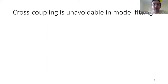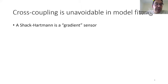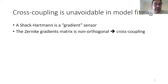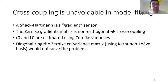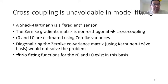So the first message I want you to take from this talk is that if you're going to work on R0 or L0, the estimation cross-coupling is unavoidable. This is because the Shack-Hartmann is a gradient sensor, and the gradient matrix is not orthogonal, although the polynomials are. Therefore, if you're estimating R0 and L0 from the Zernike variances, you're going to be stuck with cross-coupling. And even if you come up with some clever idea, like diagonalizing the Zernike co-variance with the change of basis, it will not solve your problem.